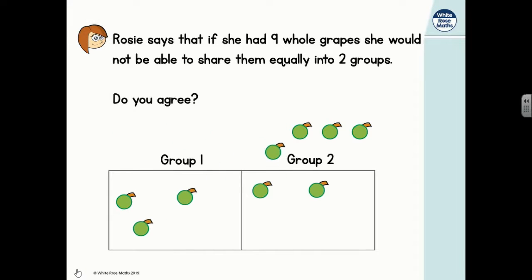Let's see what Rosie does. Ah, yes. She's sliding one grape at a time into group one and into group two. She's ended up with four grapes in group one and four grapes in group two. She's got that one whole grape left, though, and she knows she needs even groups. She can't put it into group one because then group one would have more. And she can't put it into group two because group two would have more.